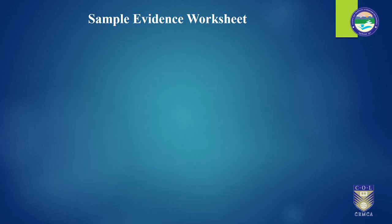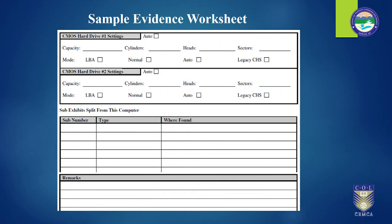Regarding CMOS hard disk settings: the capacity of the hard disk, whether it is an auto drive, number of cylinders, heads, sectors, and what mode — auto mode, legacy, normal, LBA. Anything that is highly technical, you just tick and mark it out. If there are two drives, you add another drive entry. Then what was found, where it was found, the item type, item number, sub number — you can add exhibit details here. For example, if someone wants to look at exhibit number 10, that sub number would be 10, the type would be an image, the location would be the path, and there would be some remarks.